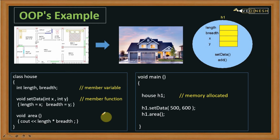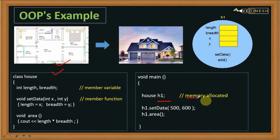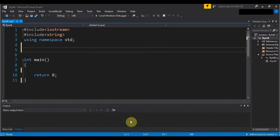The takeaway of this lecture is: how to create a class — which is nothing but a blueprint like a map — how to create an object which allocates memory like an actual house, and how to call the functions using the object. Now let's hop over to Visual Studio to see the practical demonstration.